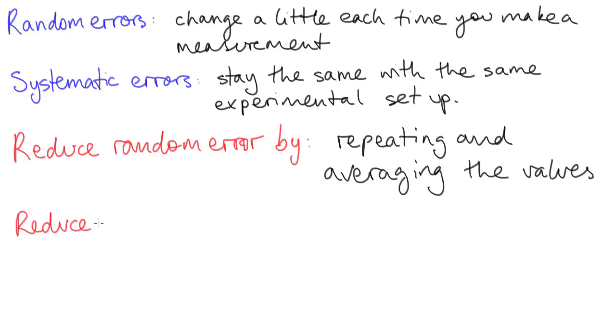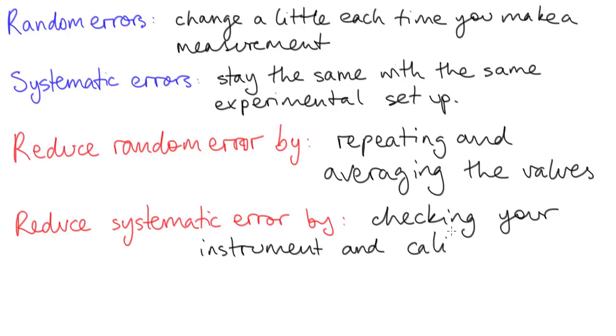Systematic errors, on the other hand, can sometimes be difficult to identify. One approach is to use different measuring instruments, or you can check your measuring instrument against a known object. This process is called calibration.